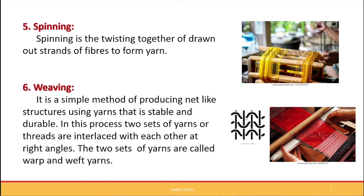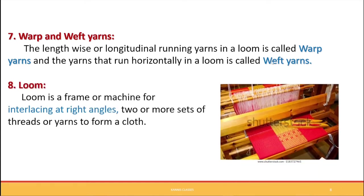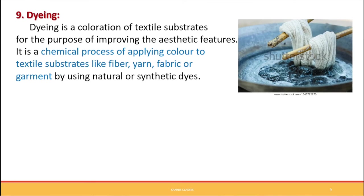The two sets of yarns used in weaving have specific names. The yarn that runs in a longitudinal or lengthwise direction in a loom is called warp yarn, and the yarn that runs horizontally is called weft yarn. A loom is a frame or machine used to interlace the warp and weft yarns at right angles - you can picture a handloom as an example.